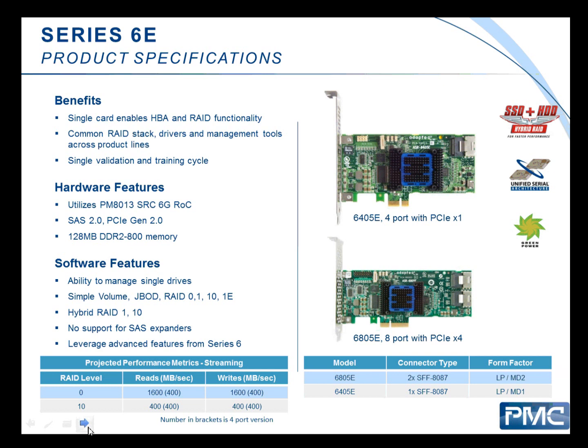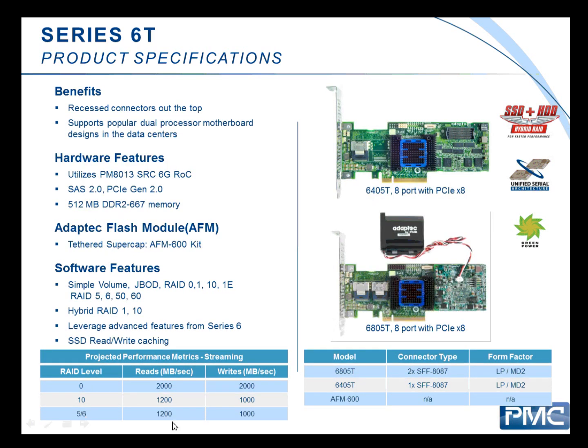The Series 6E is the little brother of the Series 6 — the low-cost model. If people know our Series 2 controllers, these are basically the follow-on products from the 3GB Series 2, now as 6GB controllers. Low-end, low-cost, 4-port, 8-port. No RAID 5 or RAID 6 — just RAID 0, RAID 1, RAID 10, and RAID 1E. RAID 1E is basically a rotating mirror across three drives, copying data to A and B, then B and C, then C and A. These are driver-compatible with the other Series 6 products.